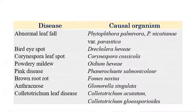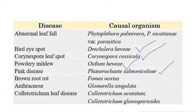The first disease is Abnormal Leaf Fall, which is caused by Phytophthora palmivora and also Phytophthora nicotianae var. parasitica. The next one is Bird Eye Spot, caused by Pestalotiopsis heveae, then Corynespora Leaf Spot caused by Corynespora cassiicola, Powdery Mildew caused by Oidium heveae, Pink Disease caused by Phanerochaete salmonicolor, Brown Root Rot caused by Phellinus noxius, Anthracnose caused by Glomerella cingulata, and Colletotrichum Leaf Disease caused by Colletotrichum acutatum and Colletotrichum gloeosporioides.